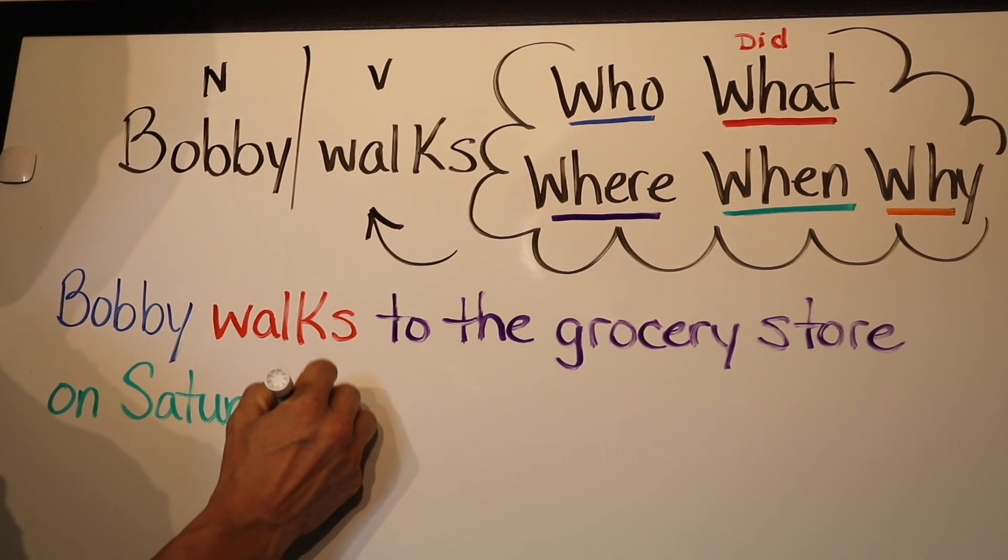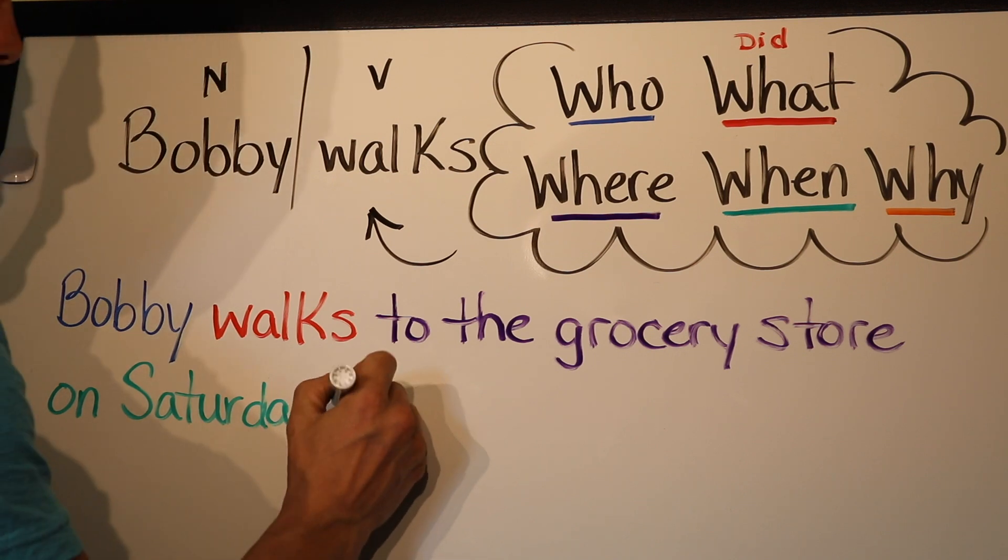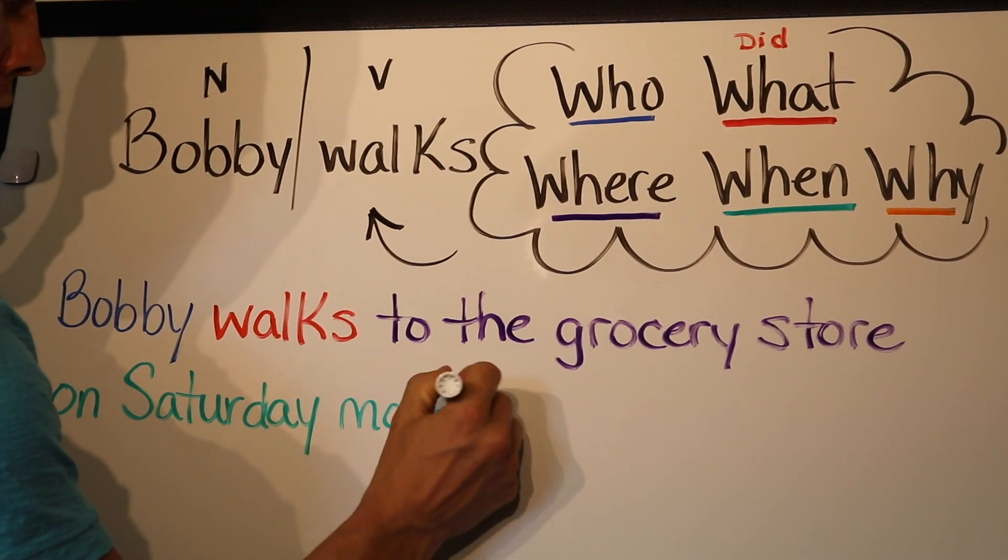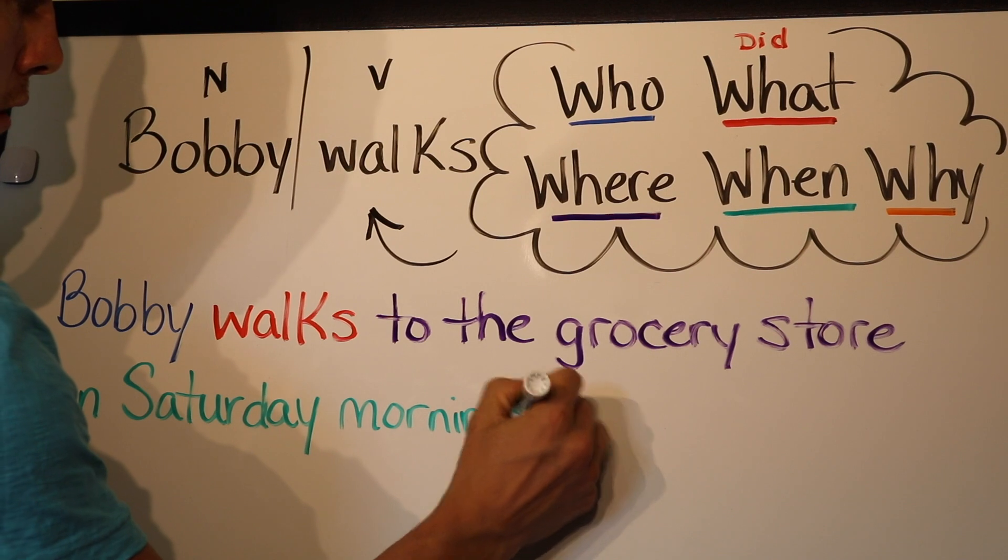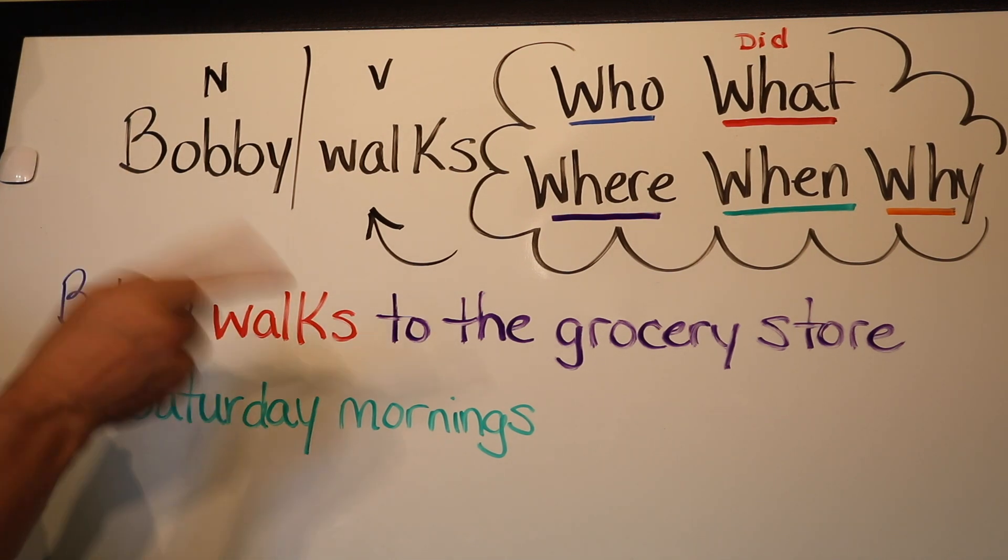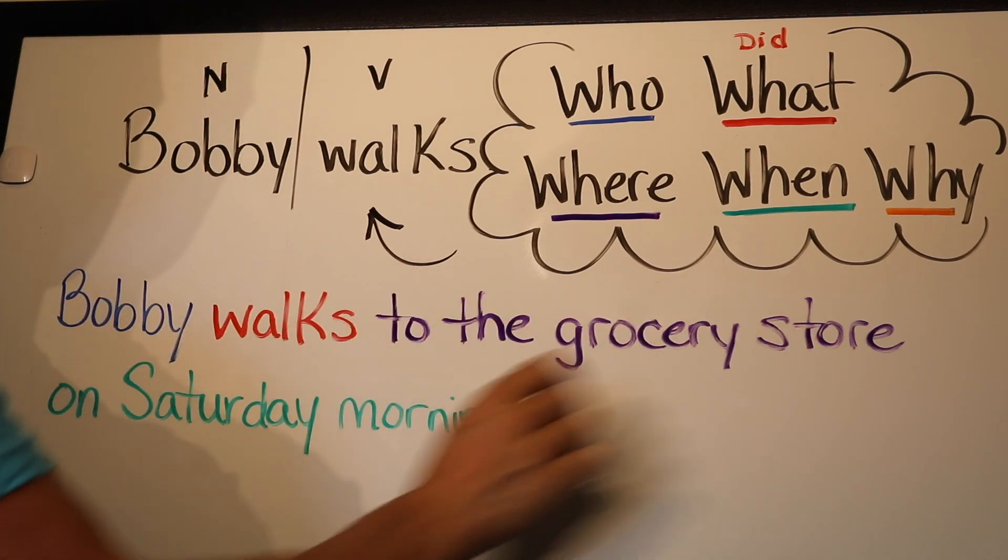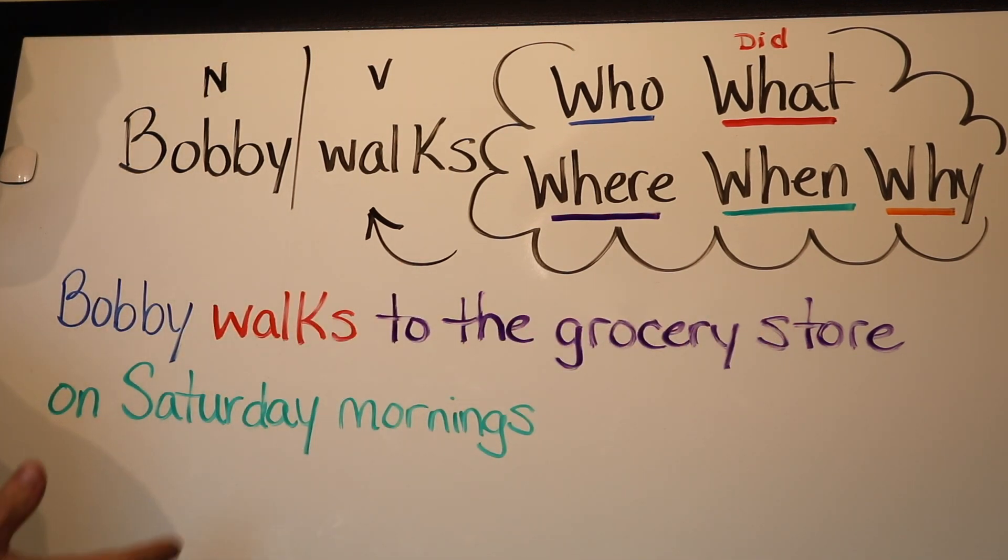Bobby walks to the grocery store on Saturday, and I could even get more when, even more specific, so on Saturday mornings. And you could even ask yourself, well why? Why does he walk to the grocery store? So let's count our words so far. How many cent words do we have? One, two, three, four, five, six, seven, eight, nine. So nine words so far. I'm getting really close to a 10-cent sentence, and I feel like this is really going to take me there. Let's answer the why. Why is Bobby walking to the grocery store on Saturday mornings?